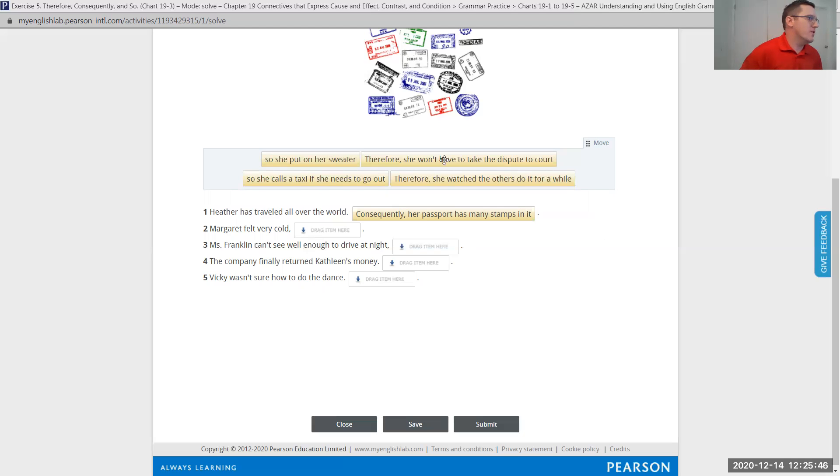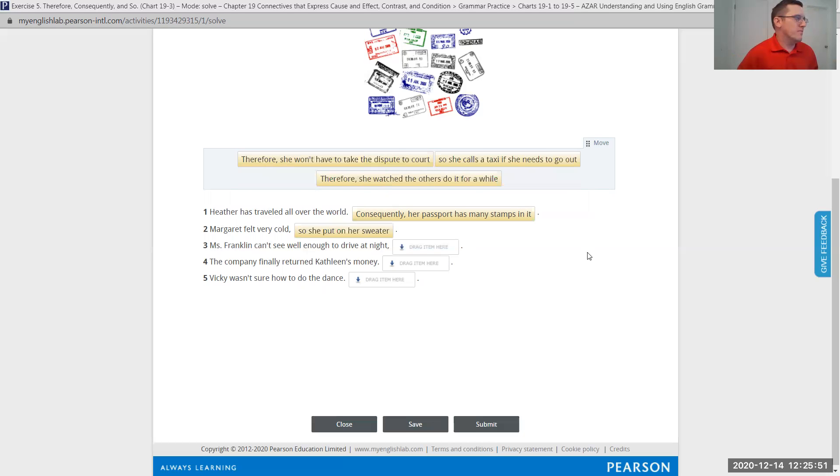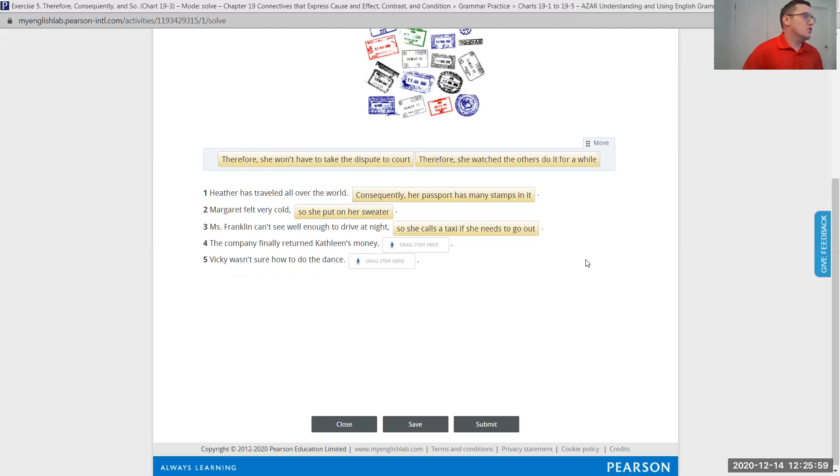Number two, Margaret felt very cold, comma, so she put on her sweater. Ms. Franklin can't see well enough to drive at night, comma, so she called a taxi if she needs to go out. Notice with number two and three, we had a comma, so if we know our grammar punctuation rules, number two and three have to be so, comma, so. Whereas number one, four and five end with a period, so it's going to be therefore or consequently. Well, we only have two more therefores, so let's look.